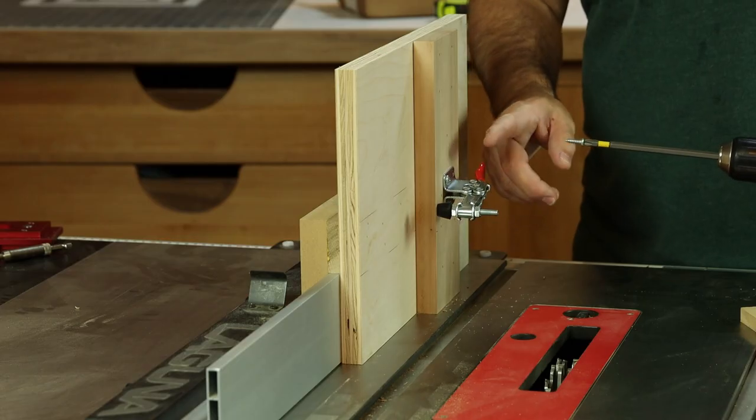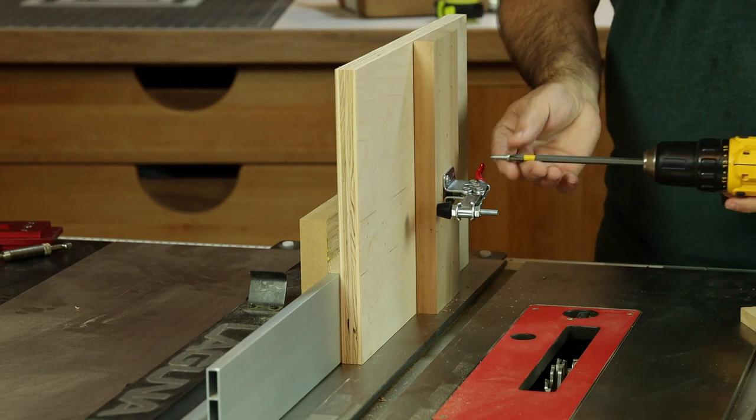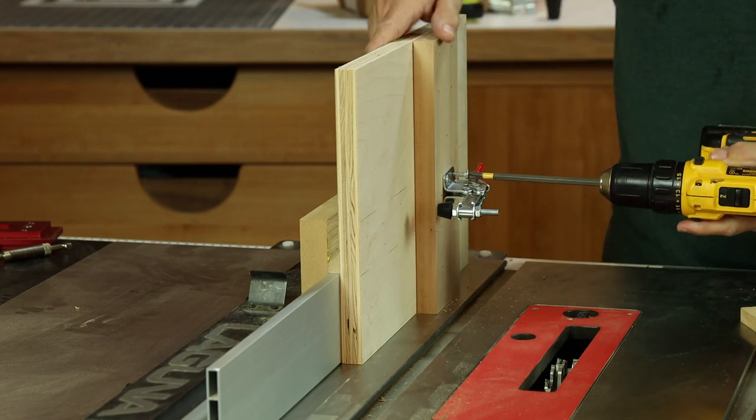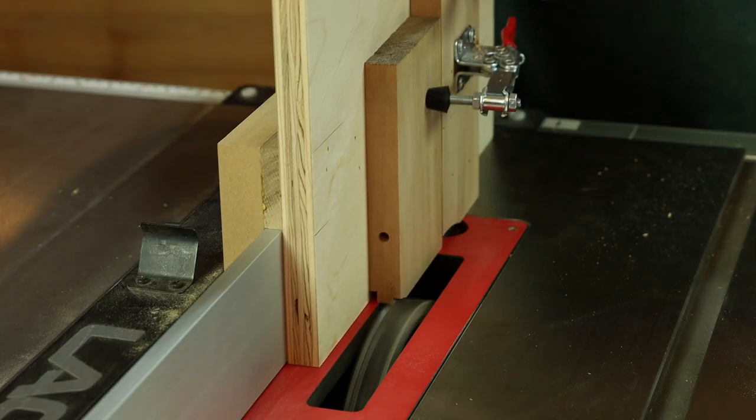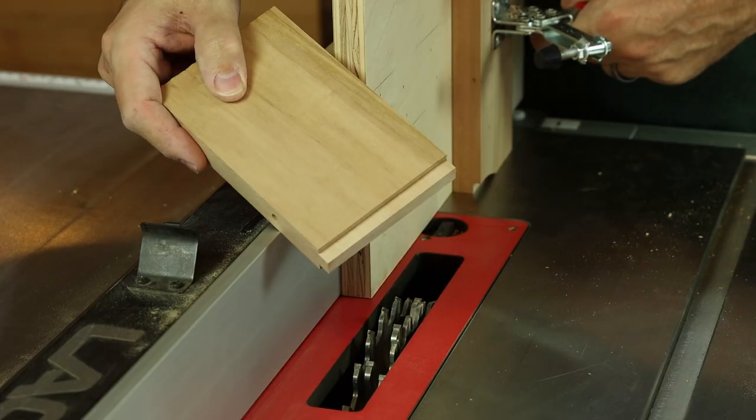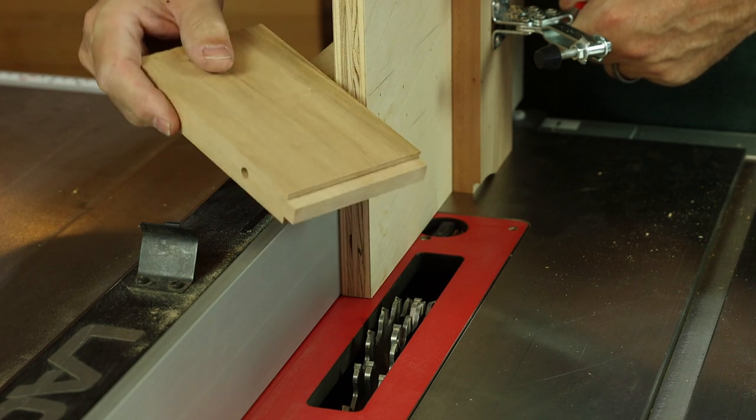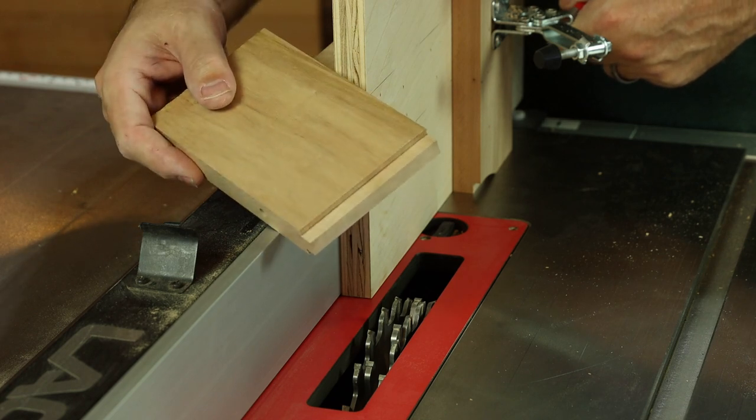And then we'll need a means to attach the workpiece to the jig. So to that end we'll add some toggle clamps here with number 10 by 5-8 screws. So even just using a dado blade stack you can make nice tenons for your woodworking projects.